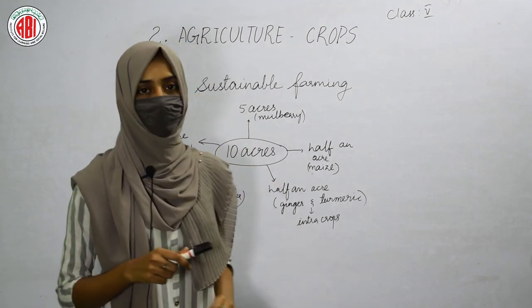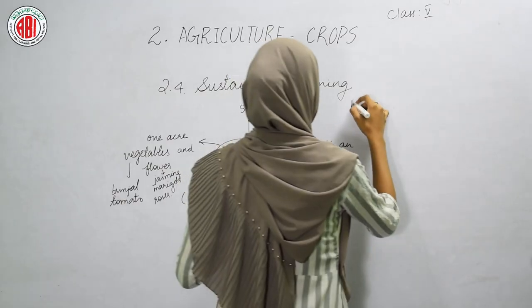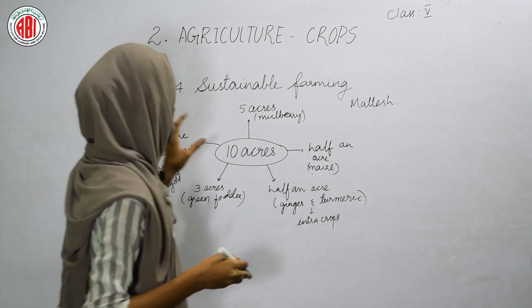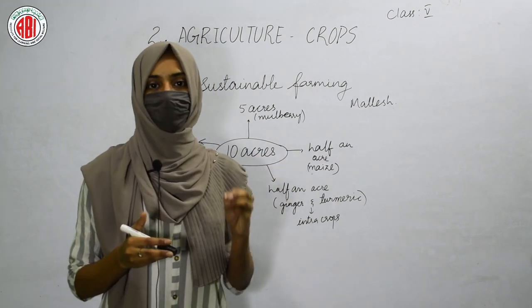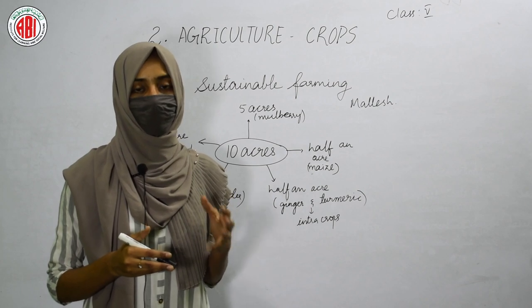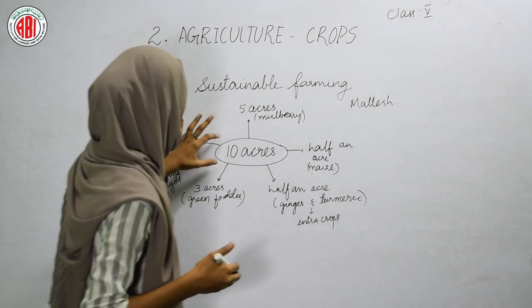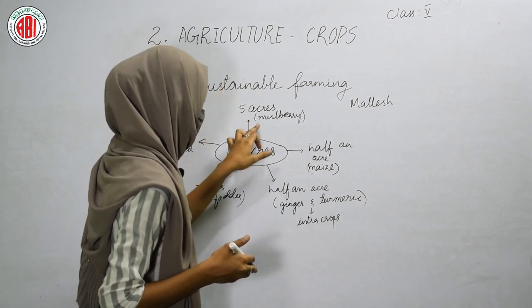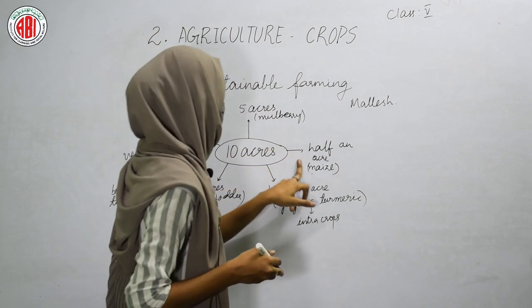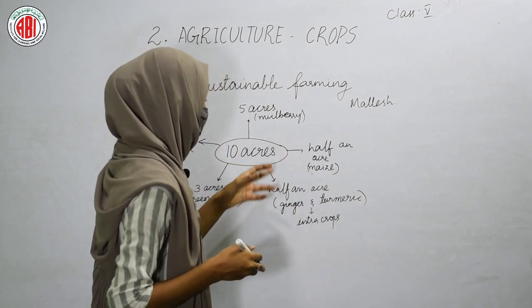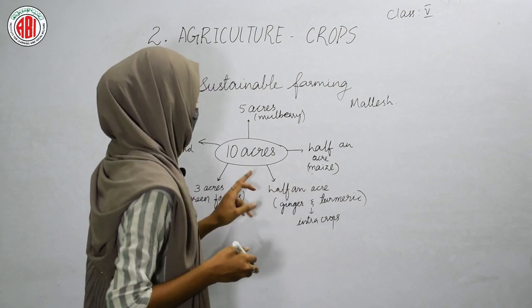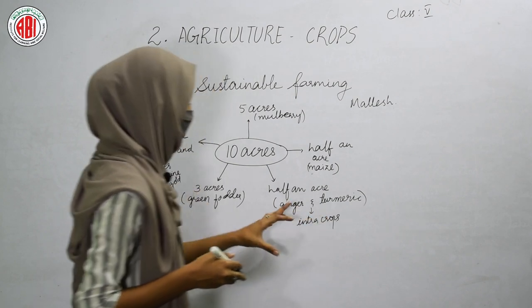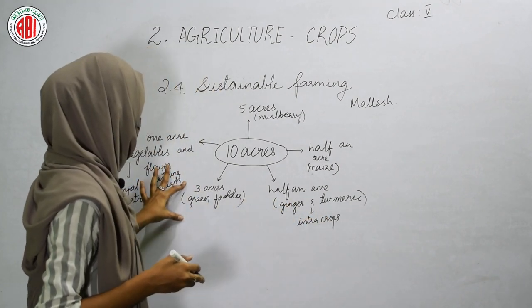We are going to discuss the story of a farmer named Malish. Malish has ten acres of land. Of these ten acres, he used five acres to grow mulberry, half an acre to grow crops like maize, and half an acre to cultivate ginger and turmeric as inter-crops. Three acres were used to grow green fodder.